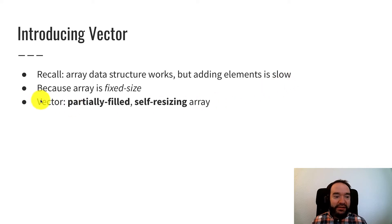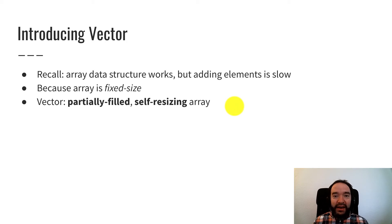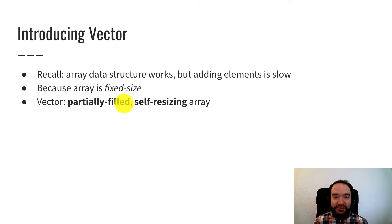A solution is a vector data structure. A vector is a partially filled, self-resizing array — a variation on an array where we take the basic array technology and add to it. The partially filled idea means that we'll make an array that's probably bigger than we need and keep track of how many elements are in use. That solves the flexibility problem.